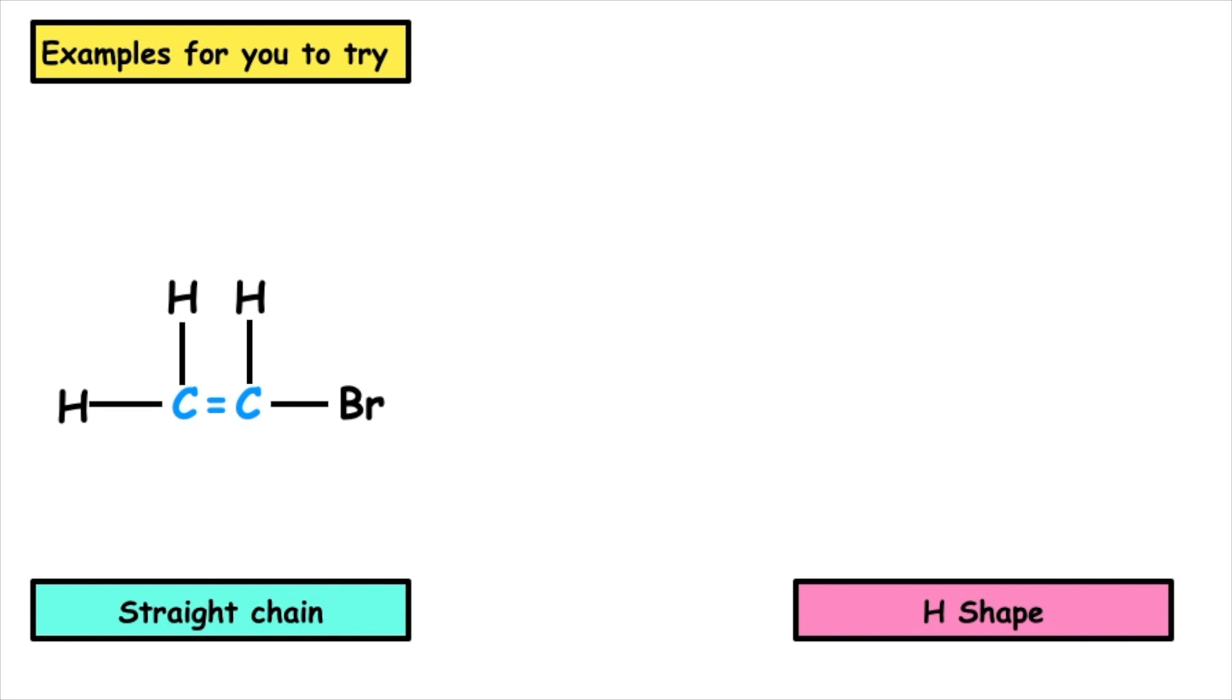So here's a couple of examples for you to have a go at. If you want to pause the video, you can take the straight-chained alkene provided and try and change it into the H shape. The answers will pop up on the screen.